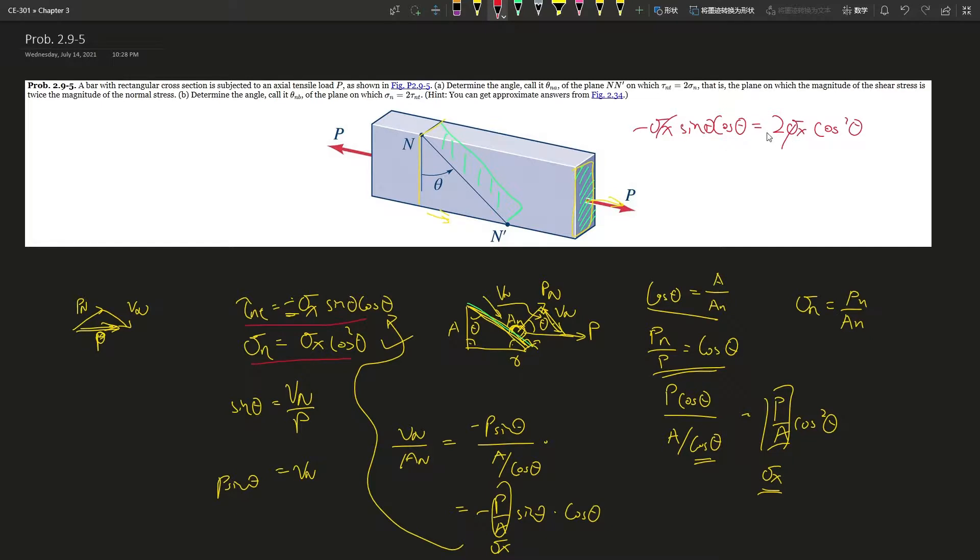This cancels out both sides. Sigma x cancels out both sides. So now we have negative sine theta over cosine theta equals two. What is this? This is tan. Or you can say tan equals negative two, so you can use the inverse function and then get your theta.